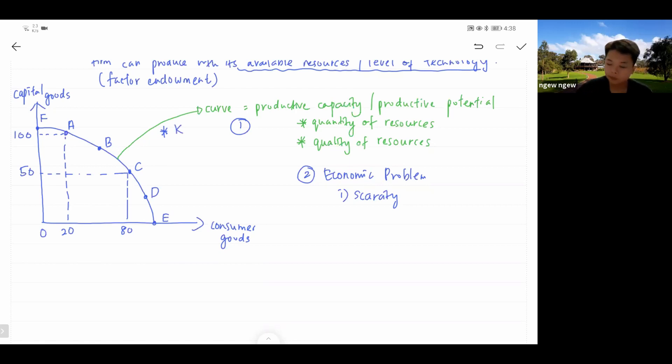So I put this combination K. Scarcity is shown by point K or combination K, which is totally outside your PPC, whereby you cannot produce up to this extent. You cannot produce this much of consumer goods plus this much of capital goods. It is unattainable. However, A-Level questions might ask you how we can consume at K in the short run or in the long run.